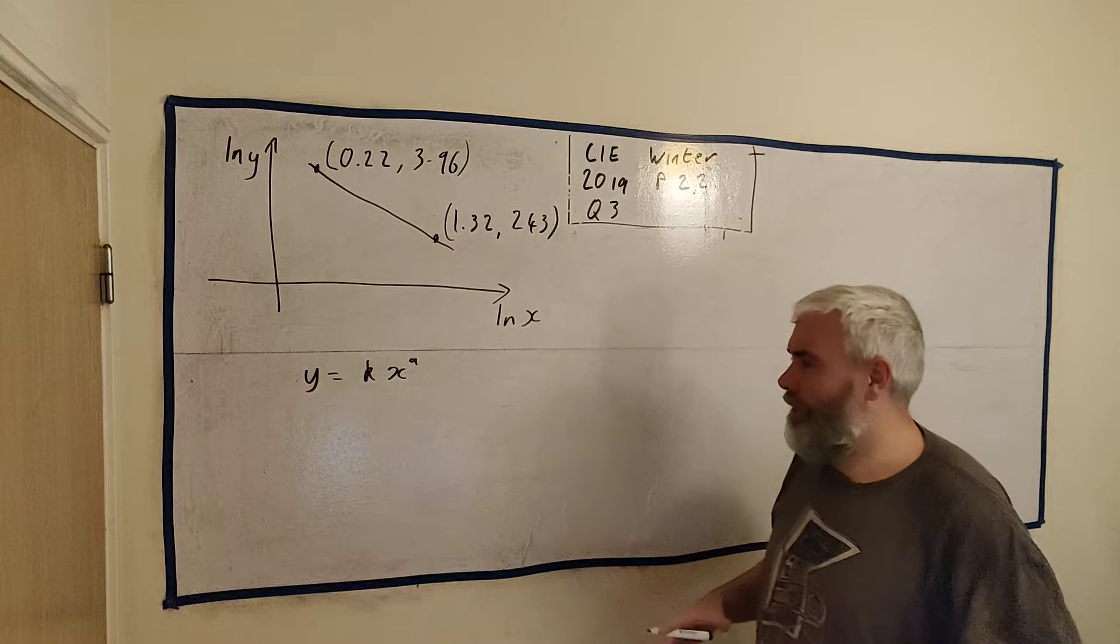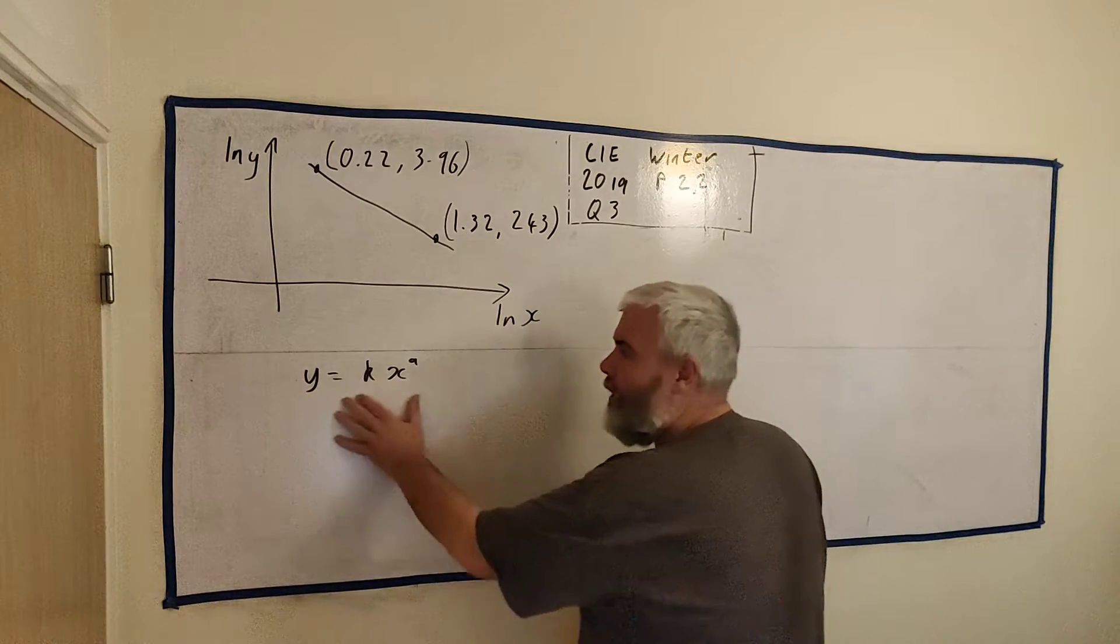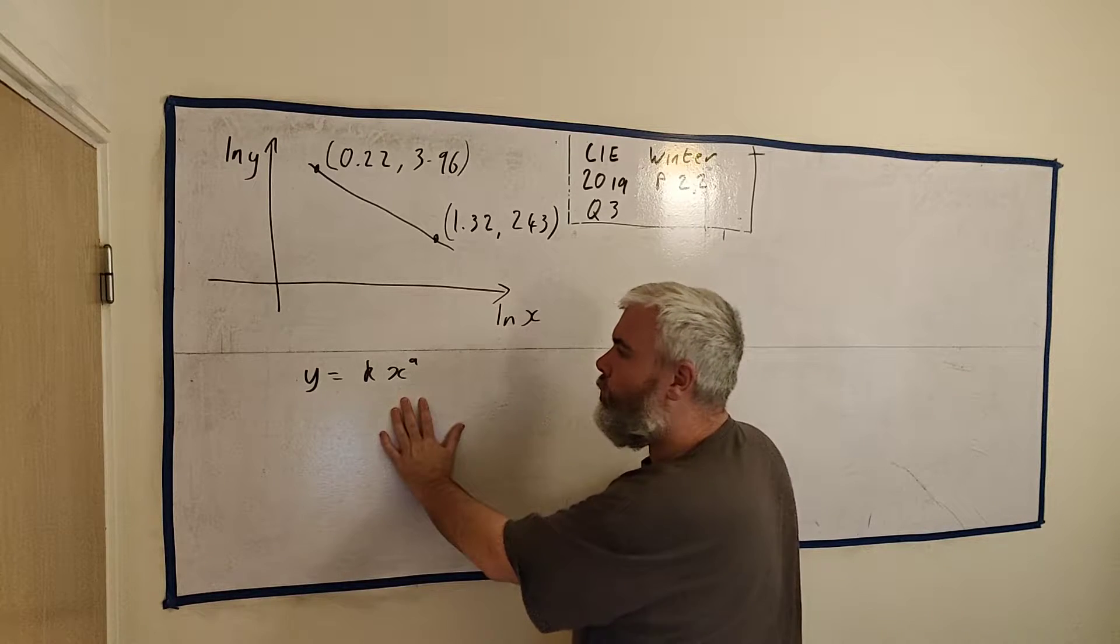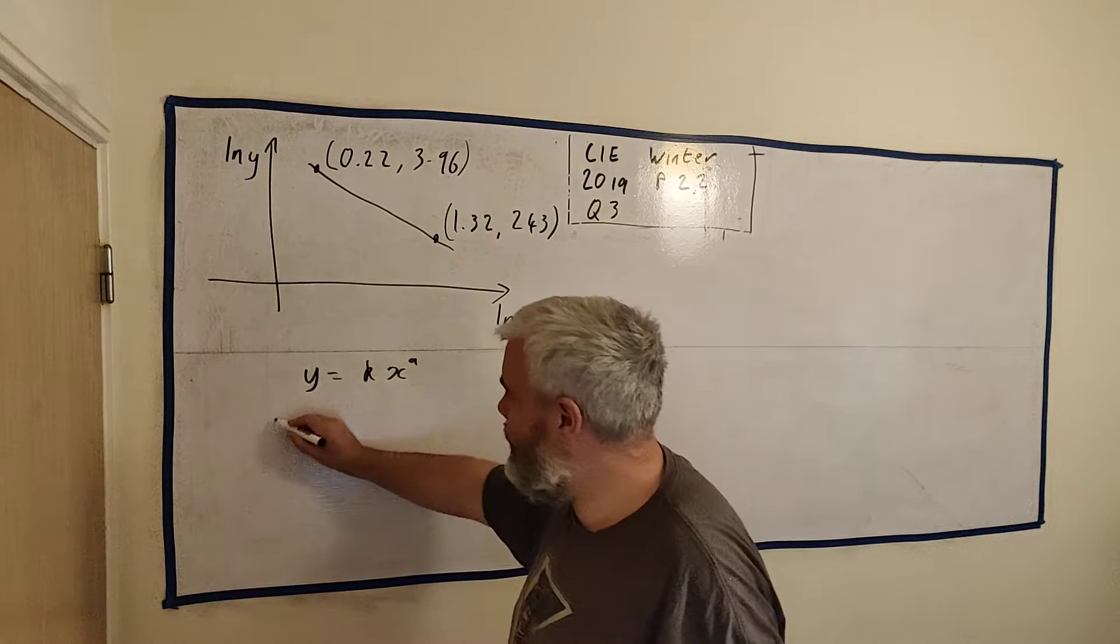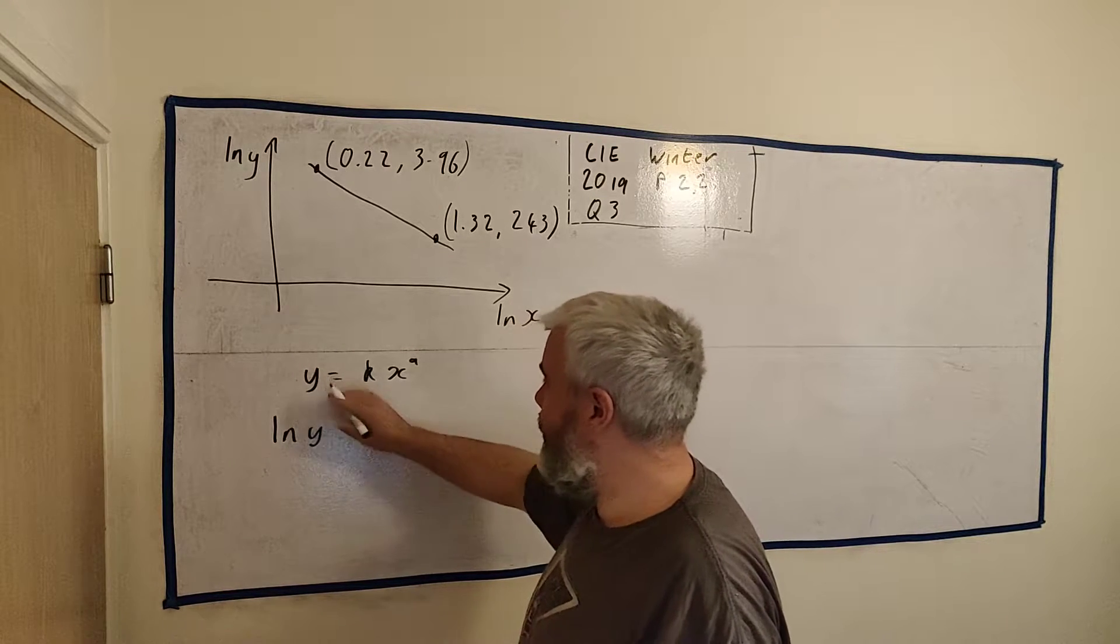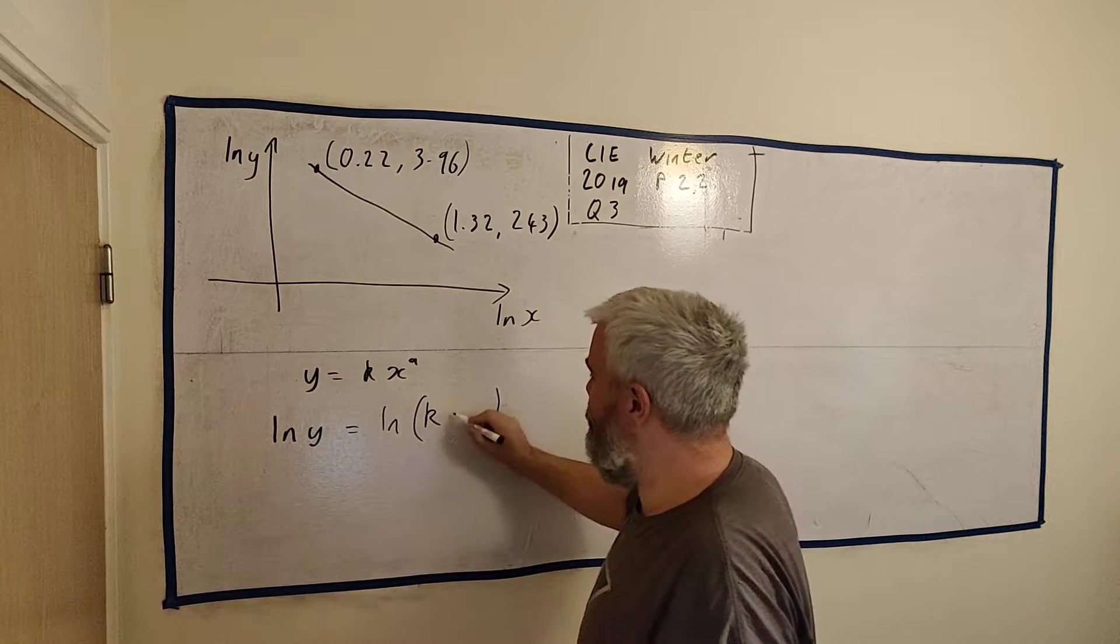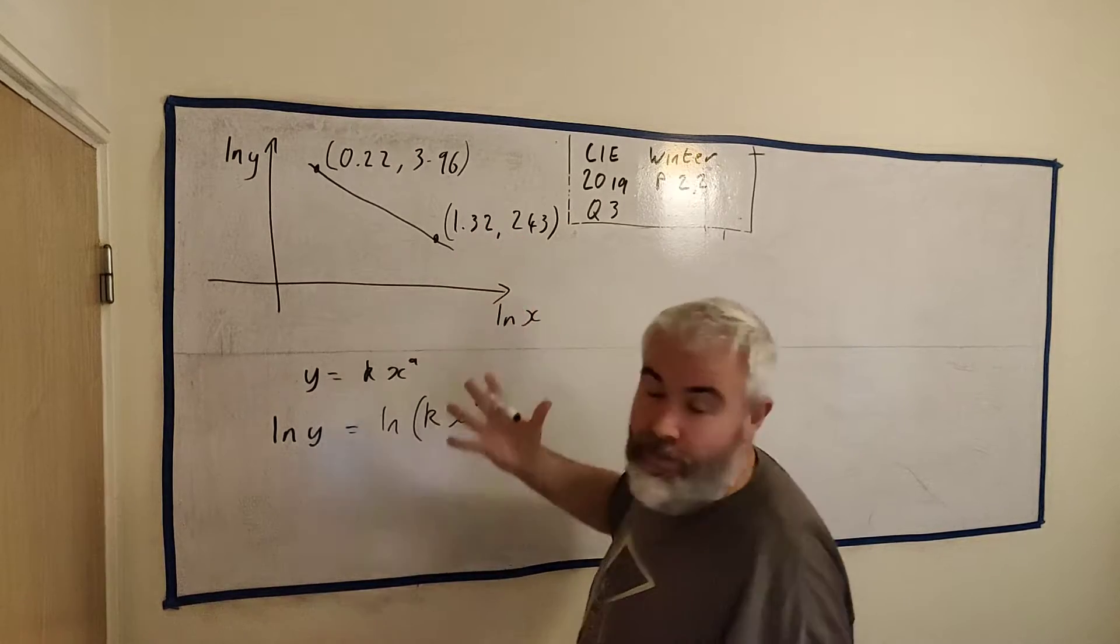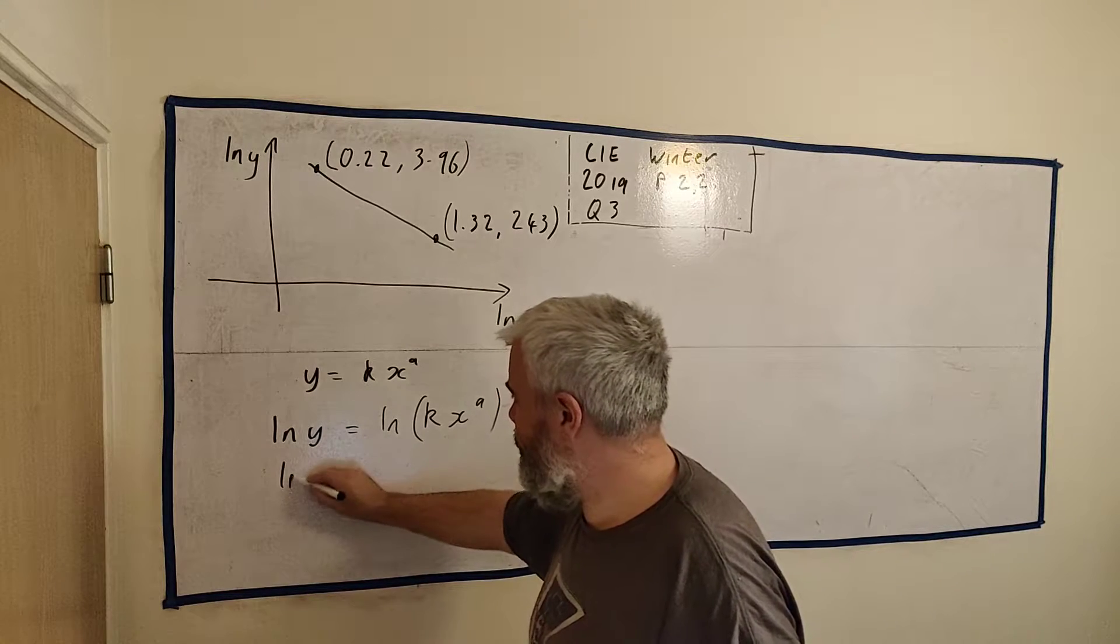Now there's two things we need to do in this question. I think the first thing I would do is I'd play around with this equation. I would try and get natural logs into this. And to do that, I simply get the natural log of both sides, natural log of the left and the natural log of the right. And the left is already done here, natural log y.